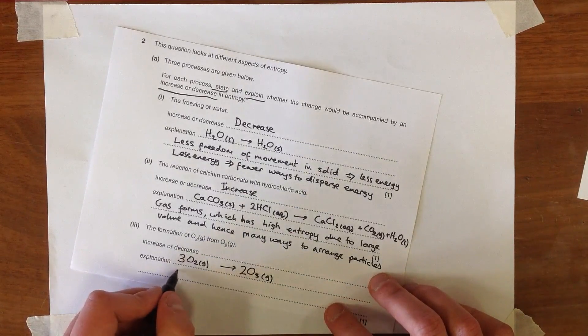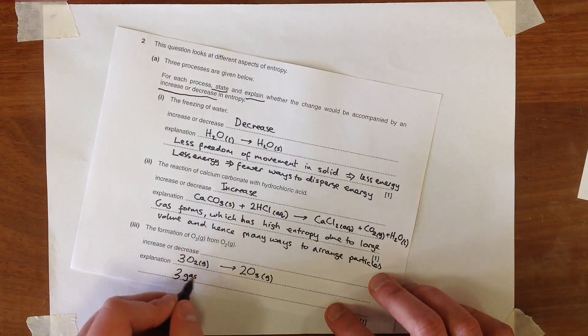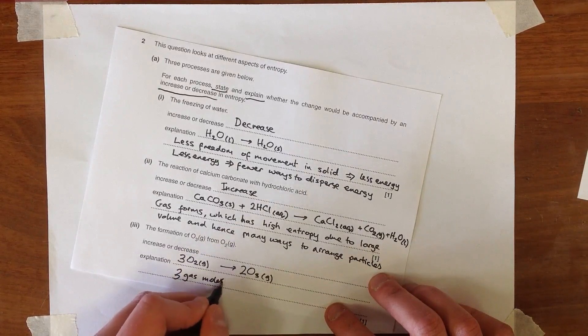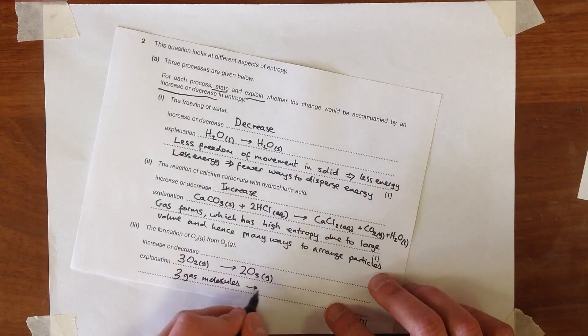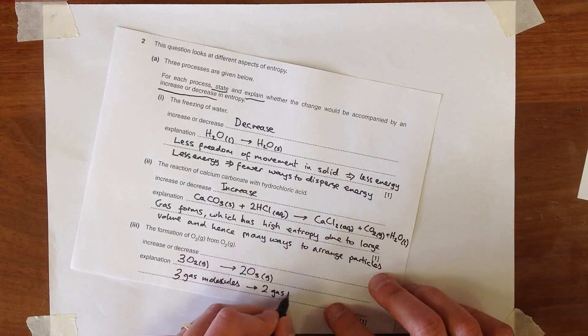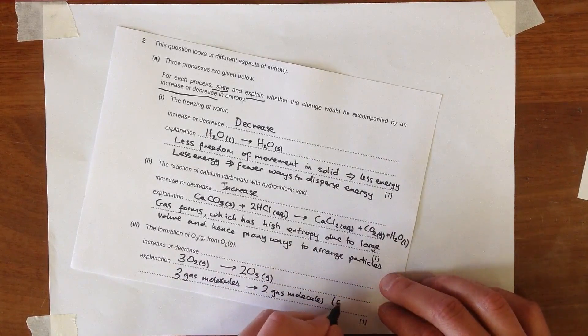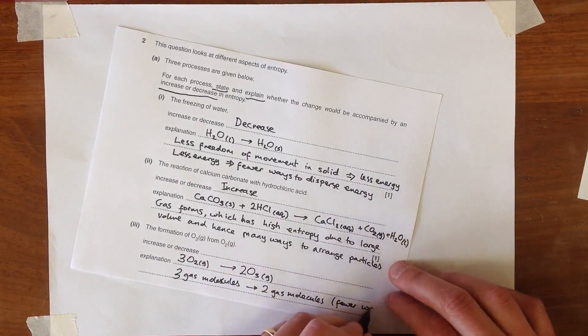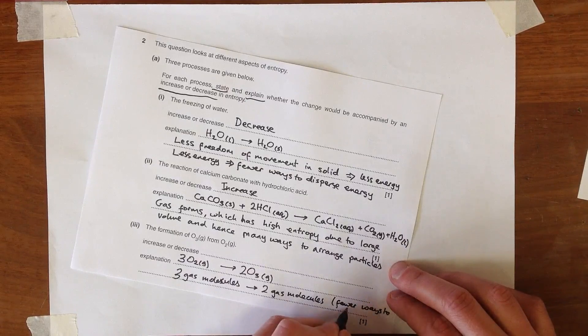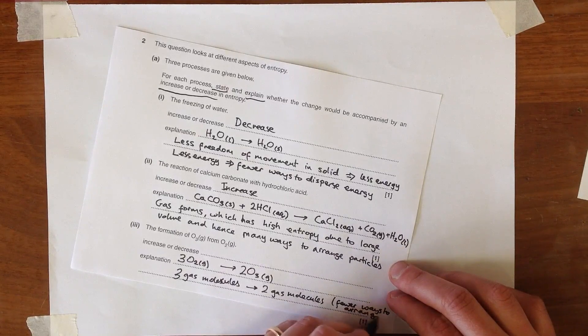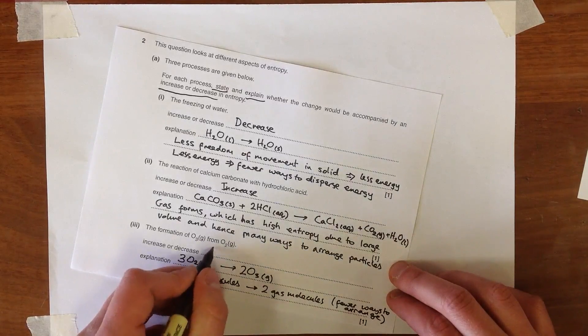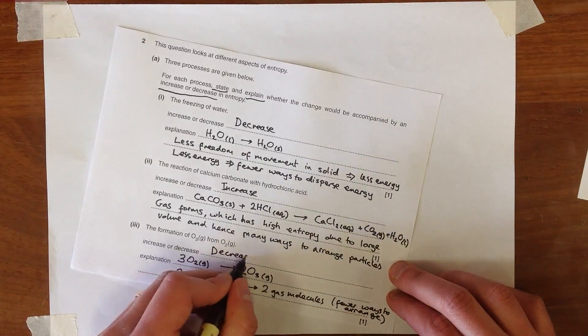And so we have, essentially, three gas molecules going to two gas molecules. And there's fewer ways to arrange these. And so we would predict, again, a decrease in entropy this time.